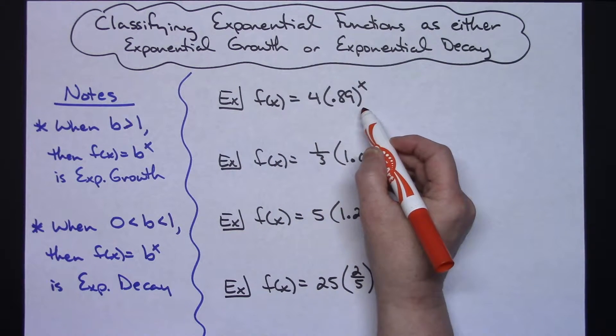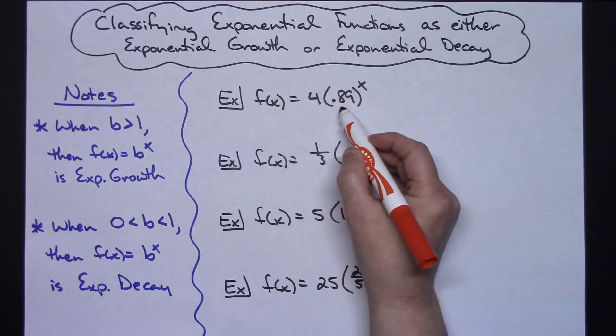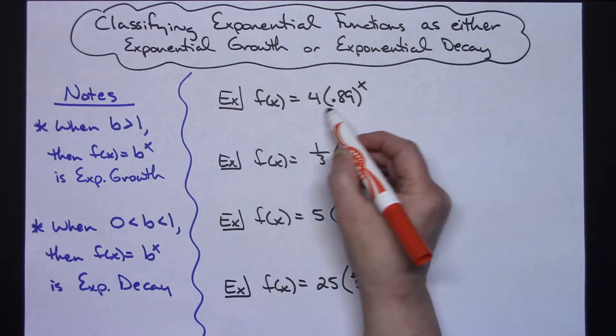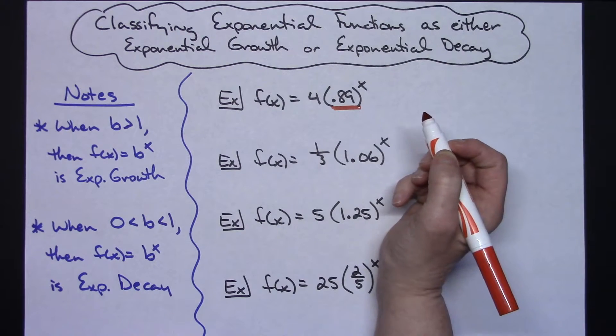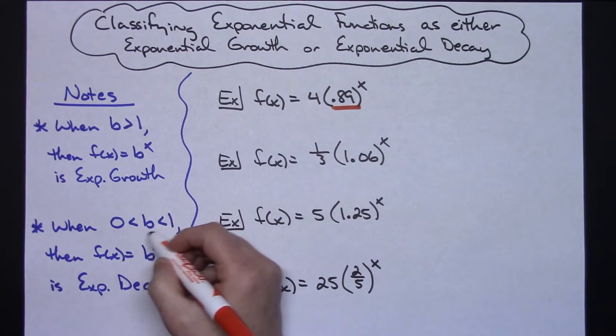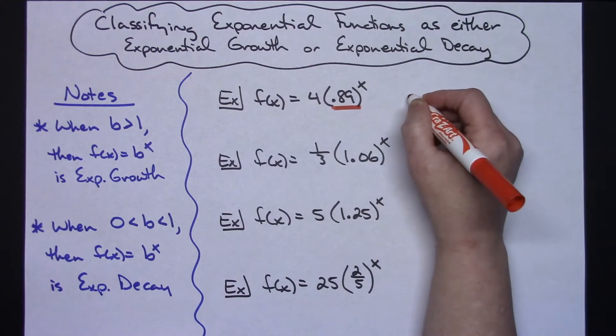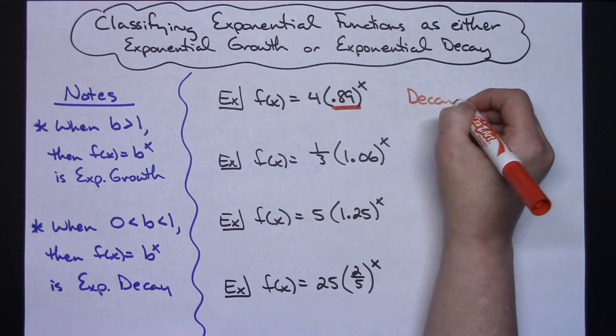So in this first example right here I've got 4 times the quantity 0.89 raised to the x power. The base, the only part that is the base, is that 0.89 right there. 0.89 falls in between 0 and 1 so this one is a decay problem.